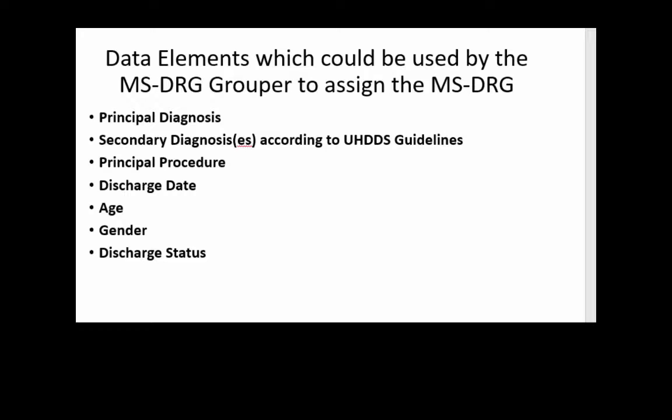The age of the patient is monitored, as are gender edits — for example, a child would not be having a mastectomy if there's no breast. Discharge status has to do with where the patient goes after discharge: if the patient goes home, there's one payment; if the patient goes to a skilled nursing facility or another hospital, there are other payments. There are many other factors considered in the final calculation of how much money the hospital gets, which was covered in HIT 105.